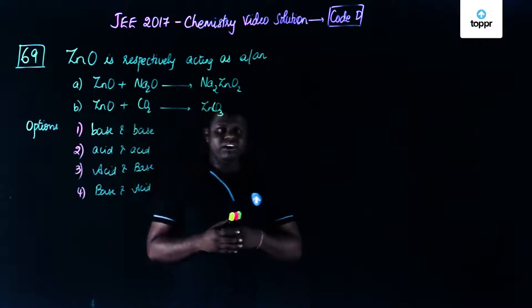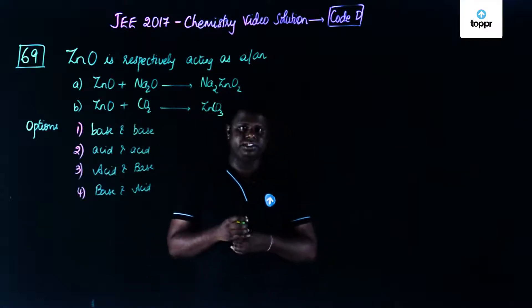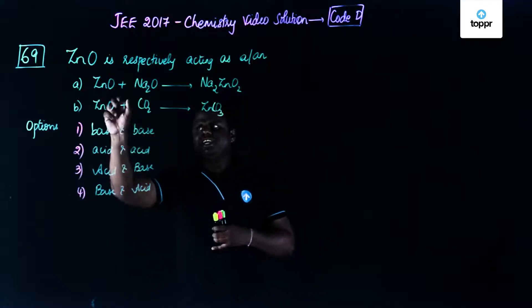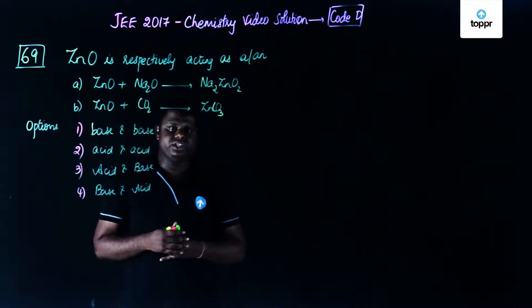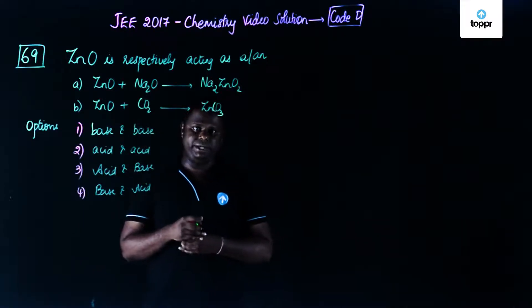The behavior of this metallic oxide has to be considered. Let's see the first reaction. Zinc oxide reacts with sodium oxide. Zinc normally exhibits an amphoteric nature, that is it can act as an acid as well as a base.